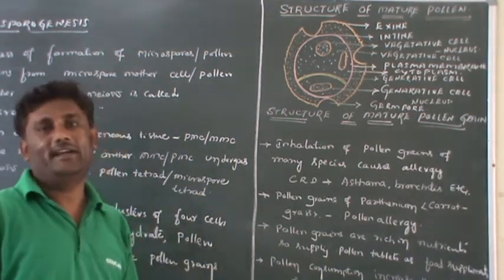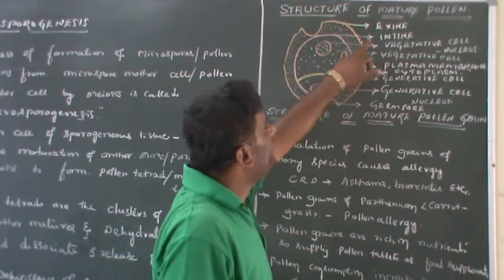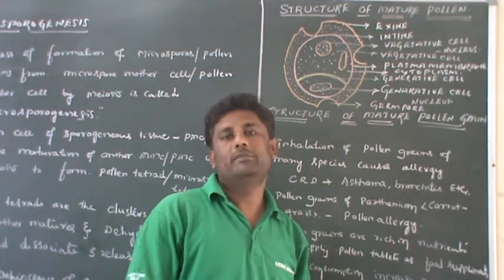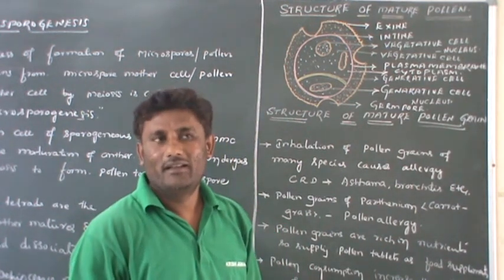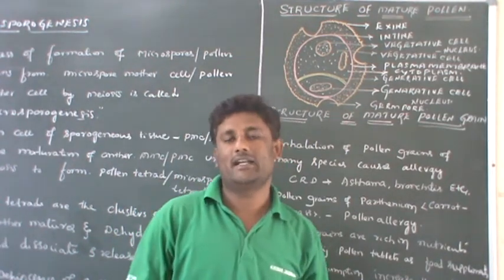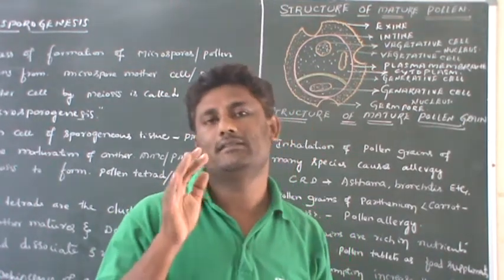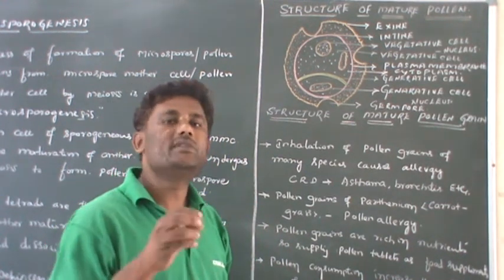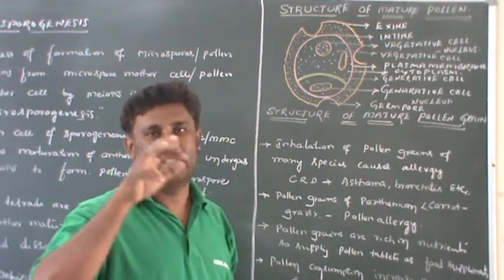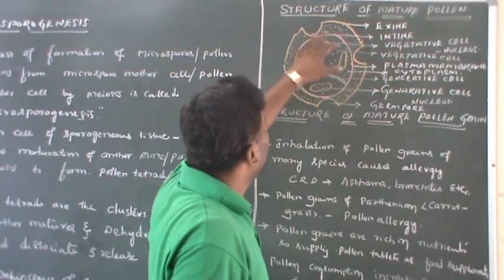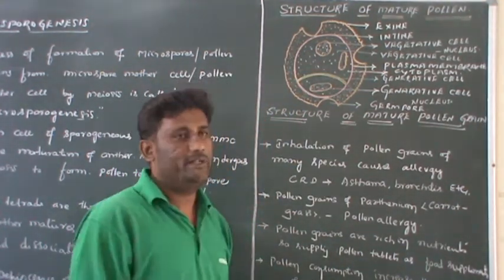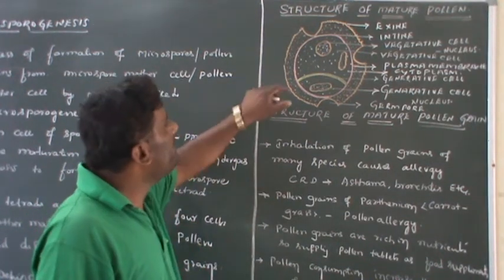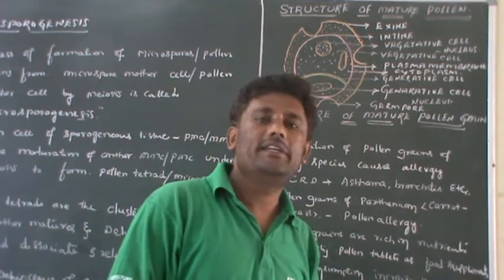Let us know the chemistry of the exine and also the intine. Chemically, the exine is made up of a component known as sporopollenin, and chemically the intine is made up of two chemical components: cellulose and pectin. The presence of sporopollenin in the exine plays a very significant role in the pollen grain because it can tolerate high temperatures, even acids and alkali substances. Due to this reason, pollen grains are preserved as fossils. Inside the pollen grain there is presence of cytoplasm, and the cytoplasm is protected by the plasma membrane.